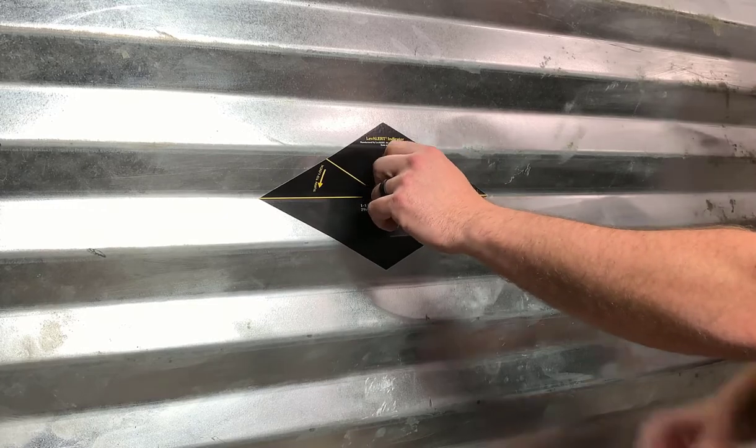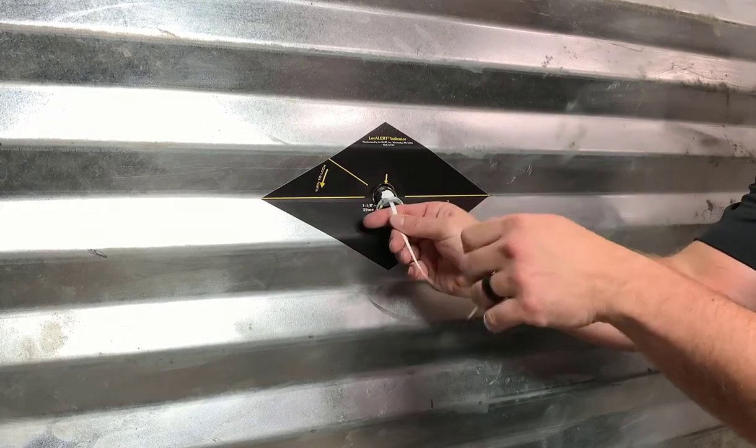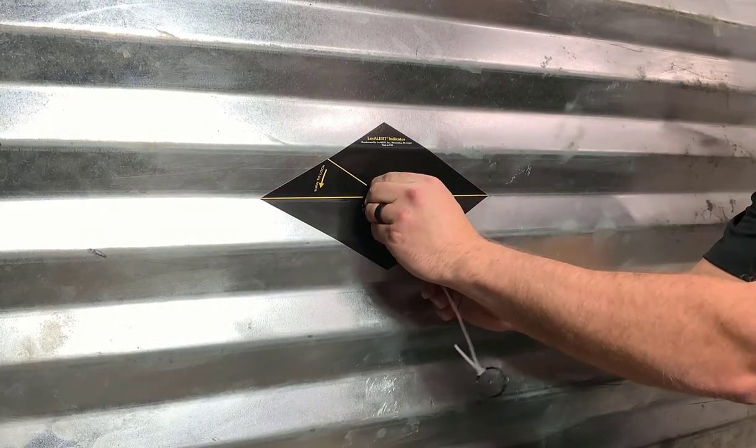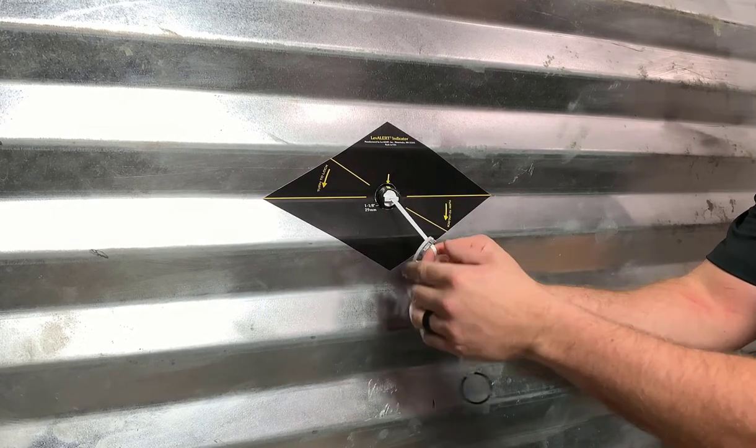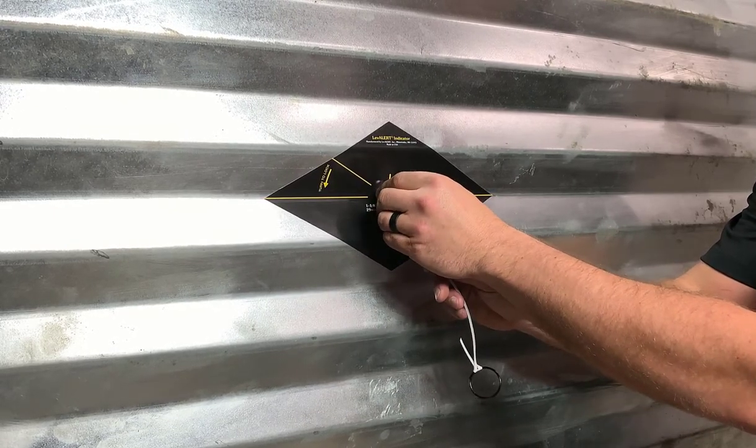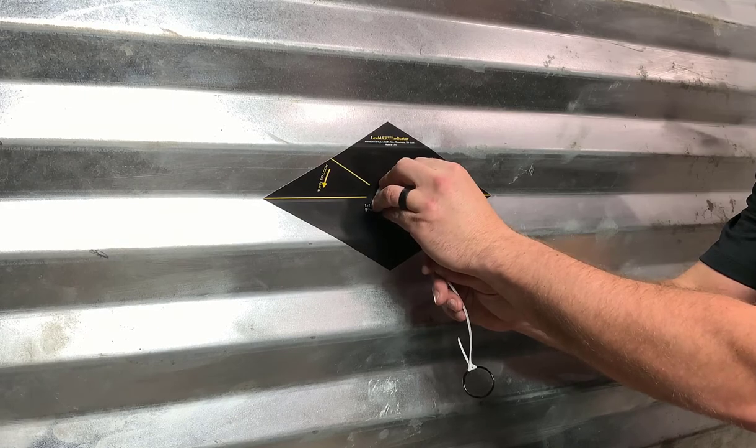Pull the stop ring and line up the yellow arrow on the sticker with the yellow arrow on the activator frame. With the yellow arrows aligned, keep light tension on the stop ring and start to thread the nut onto the activator frame by hand.